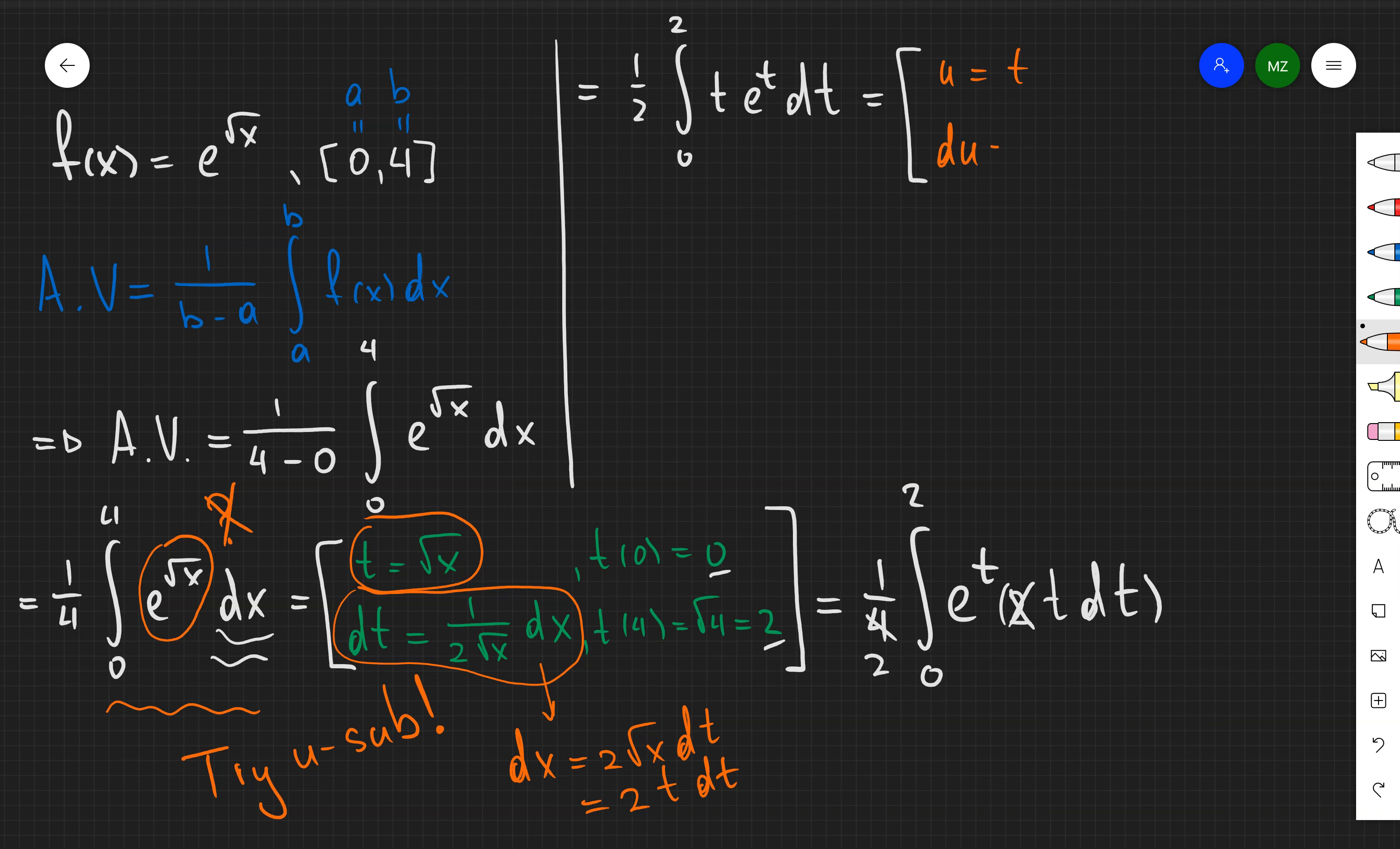And this integral is pretty familiar. And here I just need to use integration by parts. And if I'm going to apply the general technique for integration by parts, then I'm going to have 1 half times t e to the t between 0 and 2 minus the integral of the exponent.